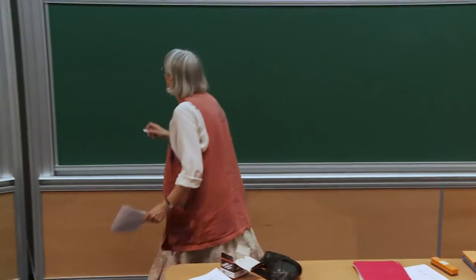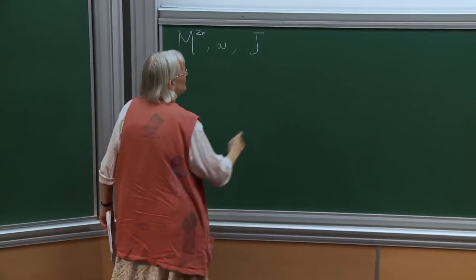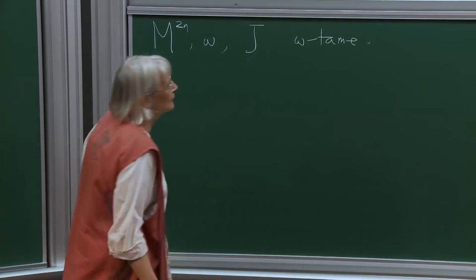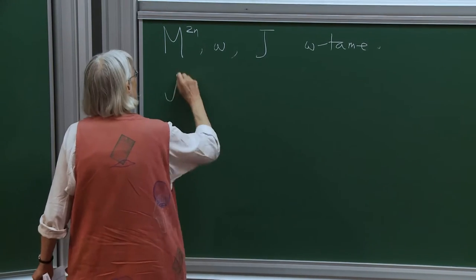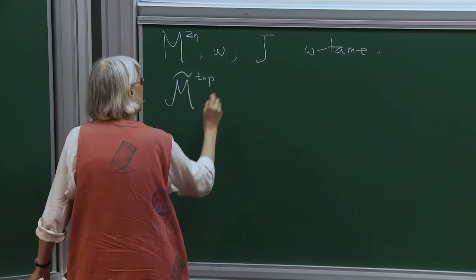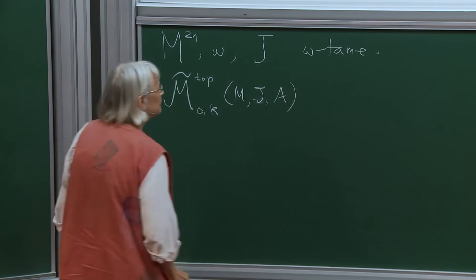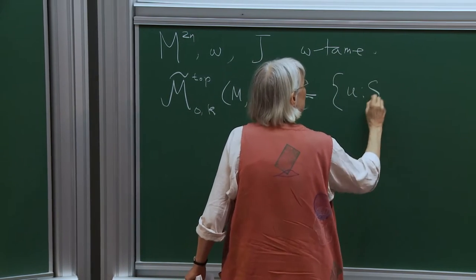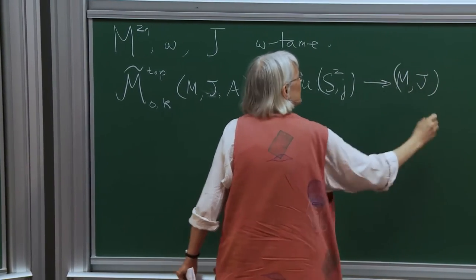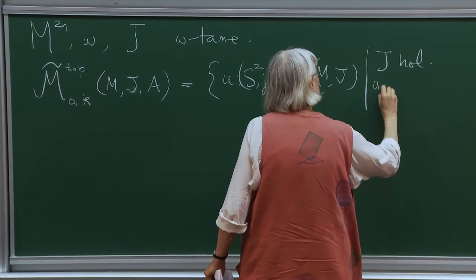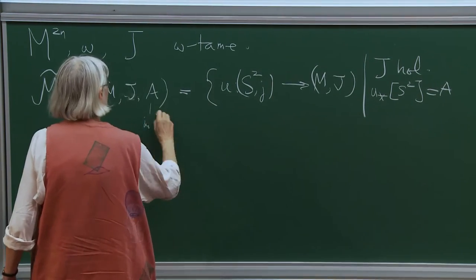So the question is this. We have a symplectic manifold with an almost complex structure J which is omega-tame, and we're looking at J-holomorphic curves. To be simple, I'm just going to think of the domain being a sphere. So I'm going to write M̃⁰ᵏ of J, A, which is going to be the set of maps from the sphere into M which are J-holomorphic and represent the class A — a class in the second homology of M.